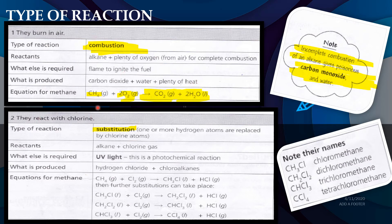Next, alkane reacts with chlorine in a substitution reaction. One or more hydrogen atoms are replaced by chlorine atoms. Alkane plus chlorine gas requires UV light. The products are hydrogen chloride (HCl) plus a chloroalkane. For example, CH4 plus Cl2 replaces one hydrogen with chlorine.